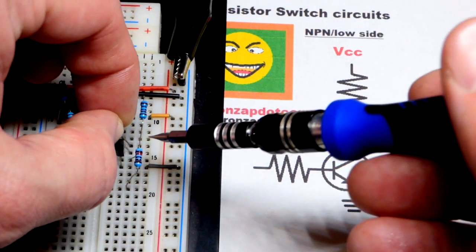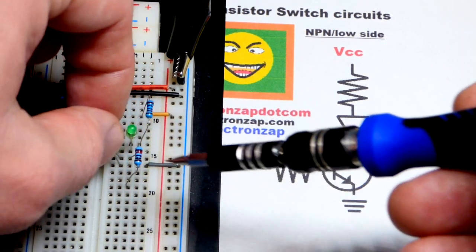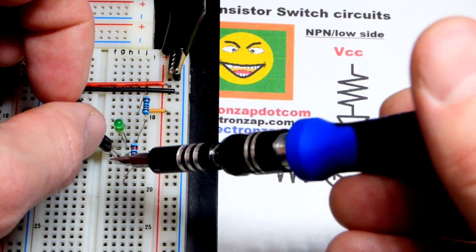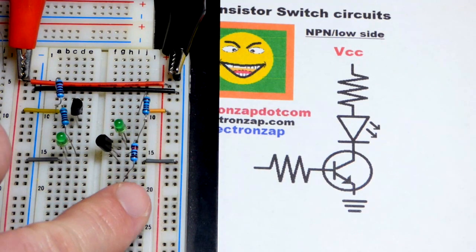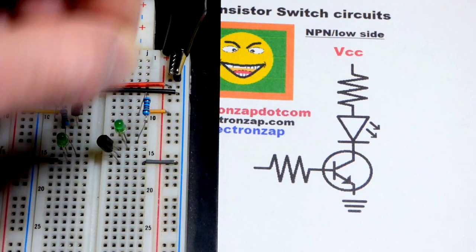So we have the positive supply to a resistor and LED. Long lead the anode to the resistor, short lead the cathode down one row. And then we have the collector up there, base in the middle, and the emitter at the bottom. We have a 10 kilo ohm just floating. I can give it a false signal so it glows a little bit, but for the most part, if it's floating, nothing's going to happen.